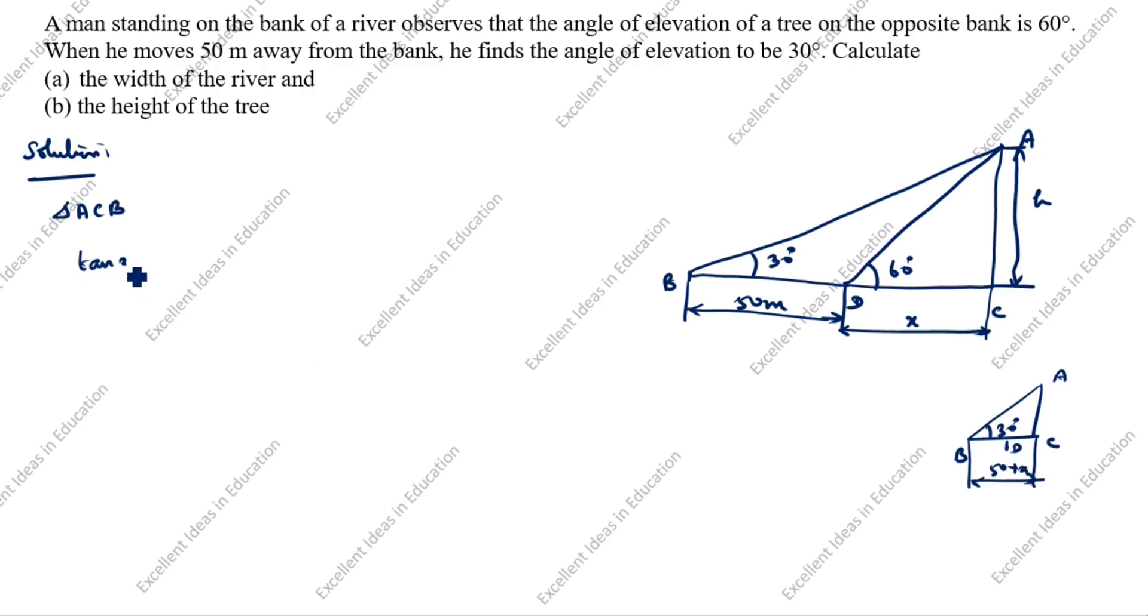Tan 30 degrees equals what? The formula is tan theta equals opposite by adjacent. What is opposite? This is opposite, this is hypotenuse, this is adjacent. Opposite is AC divided by adjacent BC. What is AC value? AC value we don't know this one, this is we will take it as h. Here BC, BC value is 50 plus x.